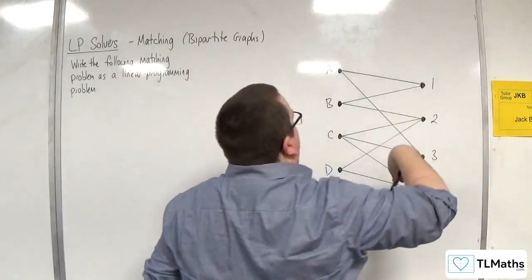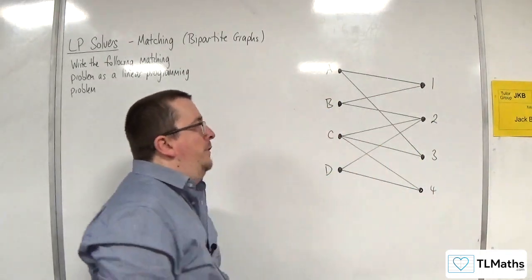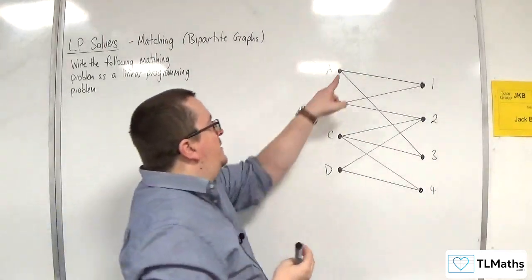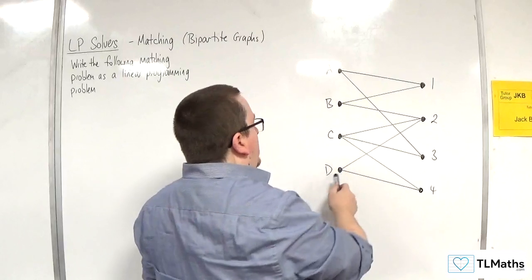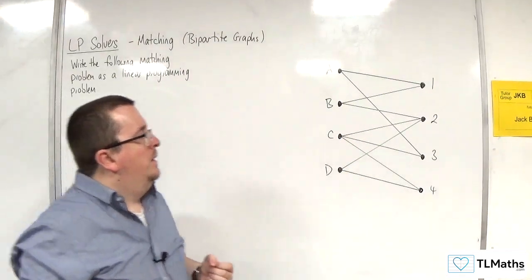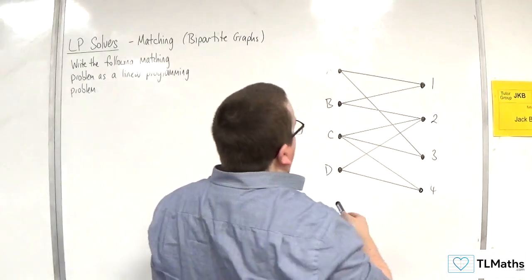And the vertices within one of those sets, none of them connect with another directly. So A is not connected to B, B is not connected to D directly. You can find a path to them, of course.